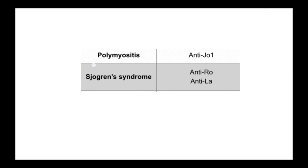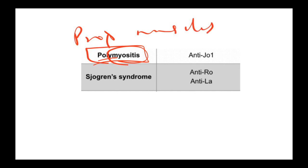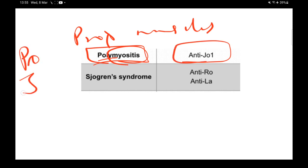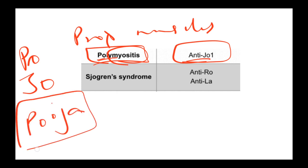Polymyositis — 'poly' meaning multiple, 'myositis' meaning muscles — involves inflammation of multiple muscles, especially the proximal muscles. The antibodies seen here are anti-Jo1. You can remember this as POJO or PUJA: PO for polymyositis and JO/JA for anti-Jo1.